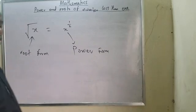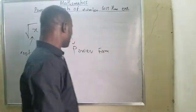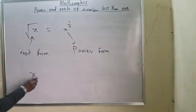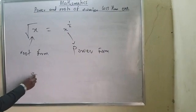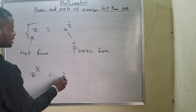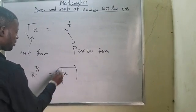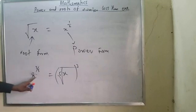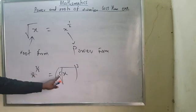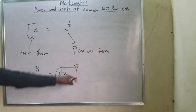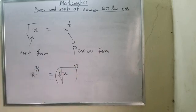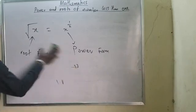Once I have something in the form of a fraction, for instance x raised to power 3 over 5, that is the same as saying the 5th root of x to the power 3. So this is root form and this is power form — take note of that.